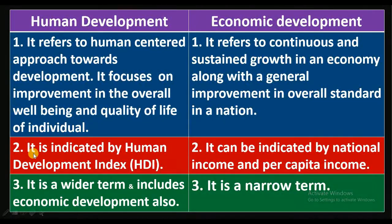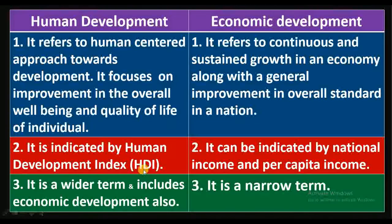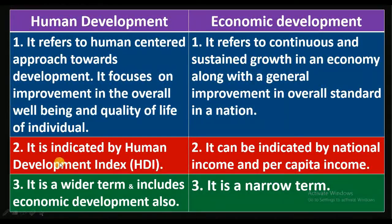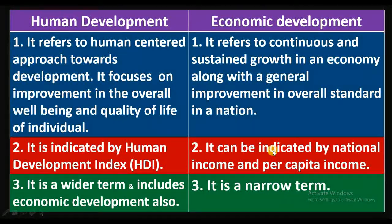Human development is indicated by the Human Development Index, or HDI, which is prepared by UNDP — the United Nations Development Programme. Economic development is indicated by national income and per capita income. We will discuss what national income and per capita income mean in the following terms.